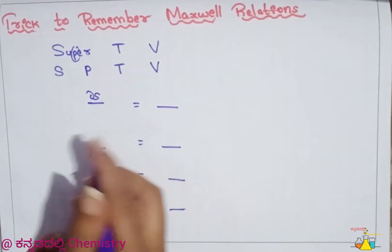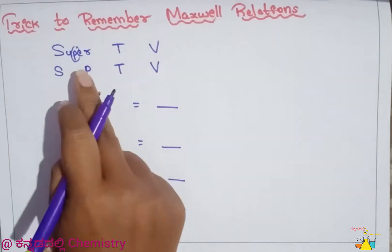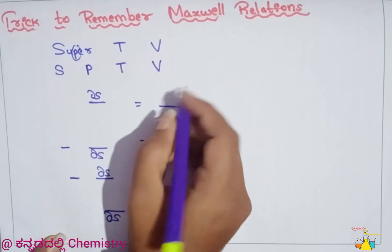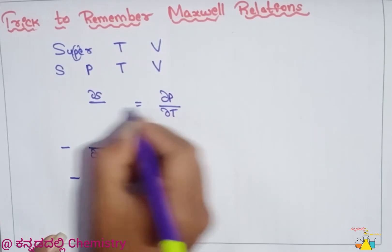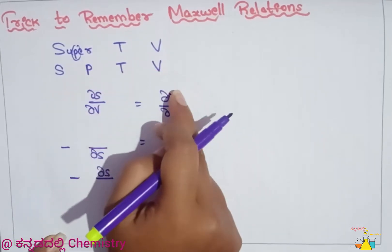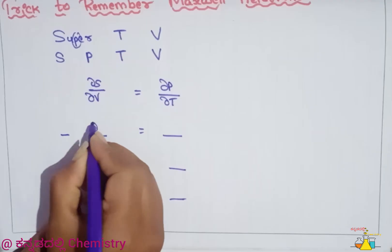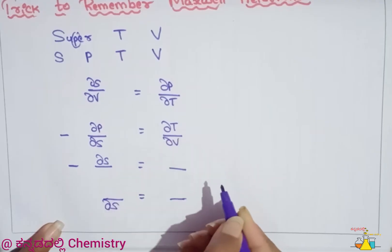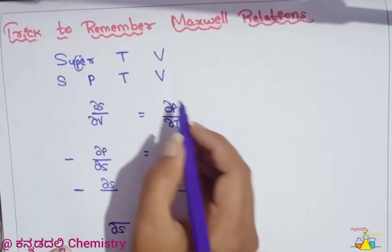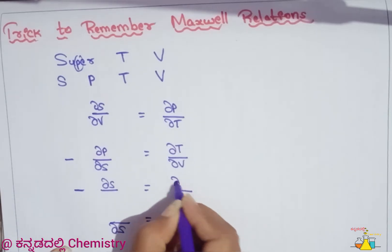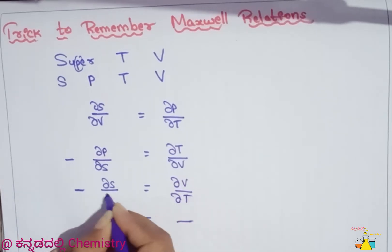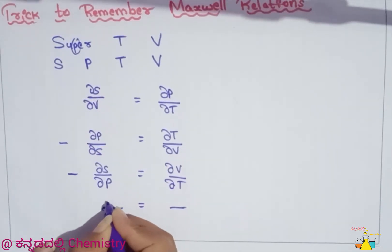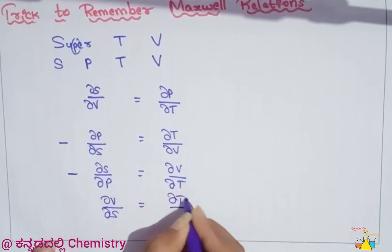The middle term is here. Next, PTV: clockwise and anticlockwise. For the first one: del P, del T, del V — so PTV in order. Next, del P, del T, del V. Anticlockwise: volume first — del V, del T, del P. Anticlockwise: del V, del T, del P.